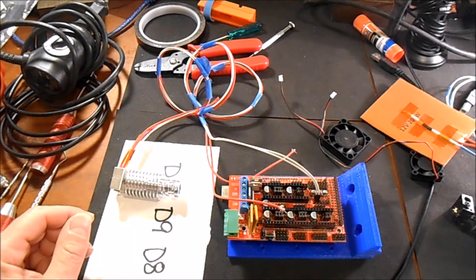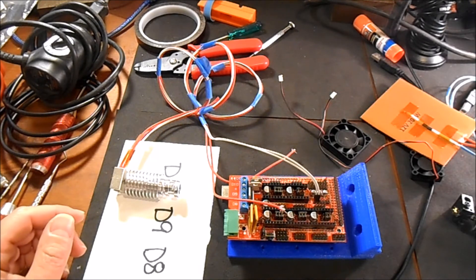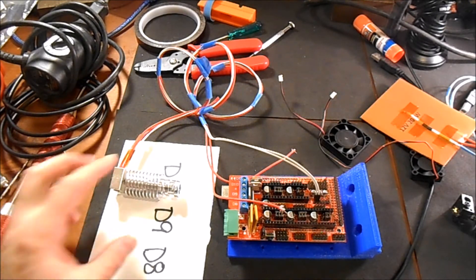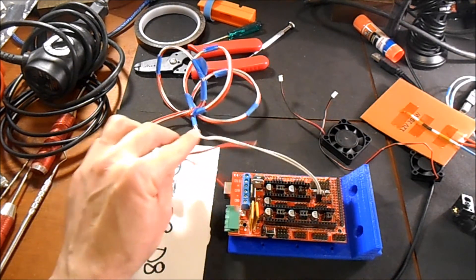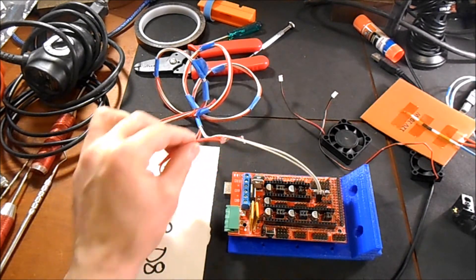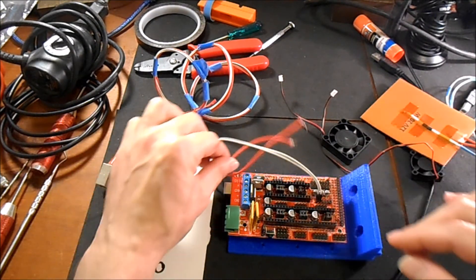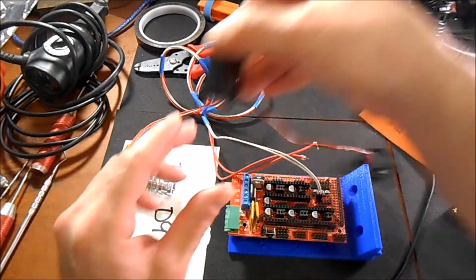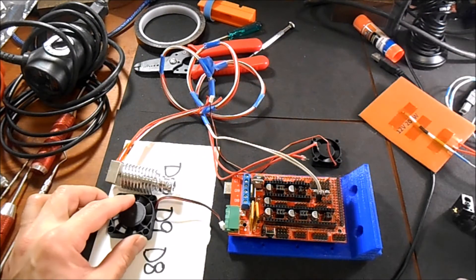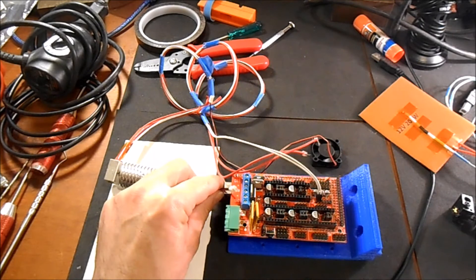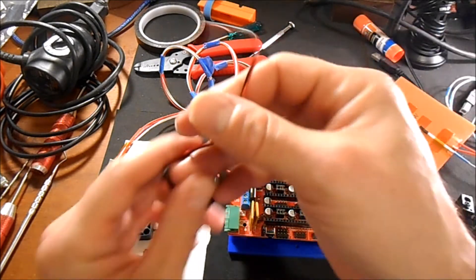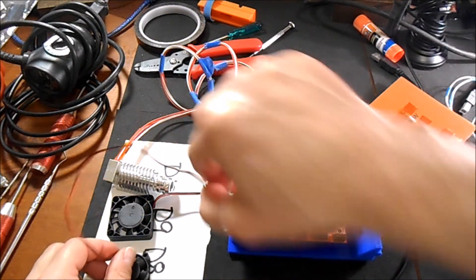The next configuration that we're going to have is going to be the hotend, which is going to connect like before to D10 with T0 as the connector. The next connection that we're going to have is D9 with a fan connected, and then D8 with a fan connected.